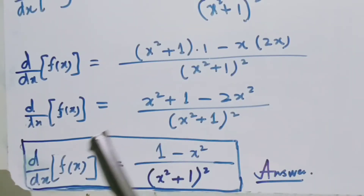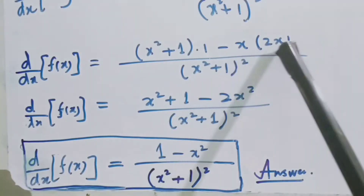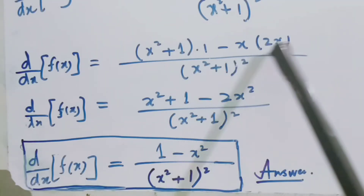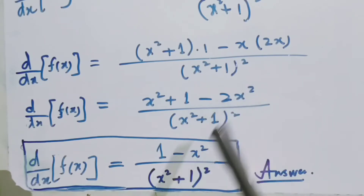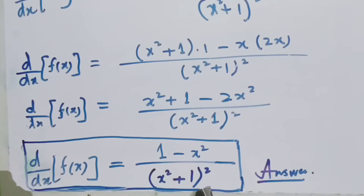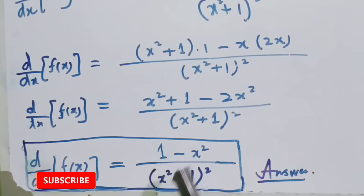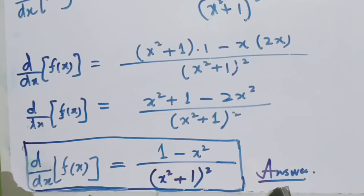After simplification, (x² + 1) times 1 gives (x² + 1), and x times 2x gives 2x². So the numerator becomes x² + 1 − 2x² = 1 − x². The final answer is: the derivative of f(x) = (1 − x²) / (x² + 1)². This concludes our first example.